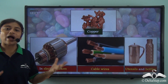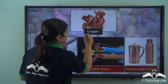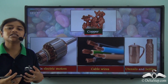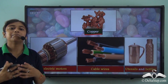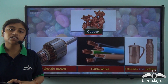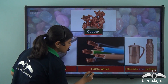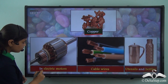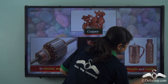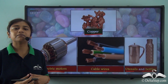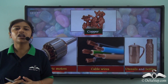Now let us come to the widely and most commonly used mineral — Copper. Copper is an important metallic mineral used on a daily basis. It has metallic properties and is a good conductor of heat and electricity, making it widely used in electrical wiring and cable wires. It is also commonly used in electric motors and in utensils and bottles. So besides being an important mineral, Copper is also widely and commonly used in our households.